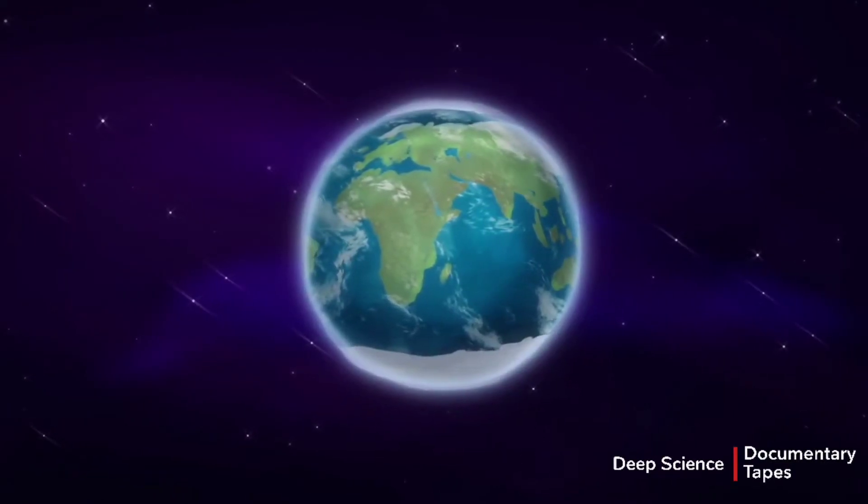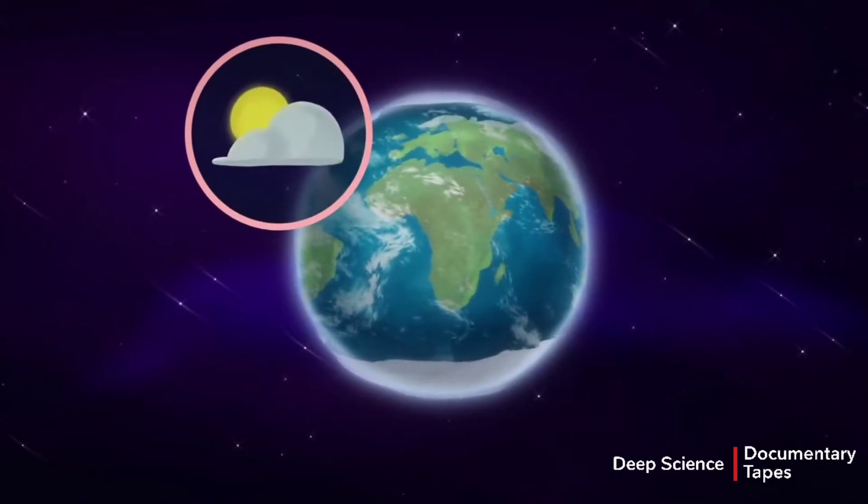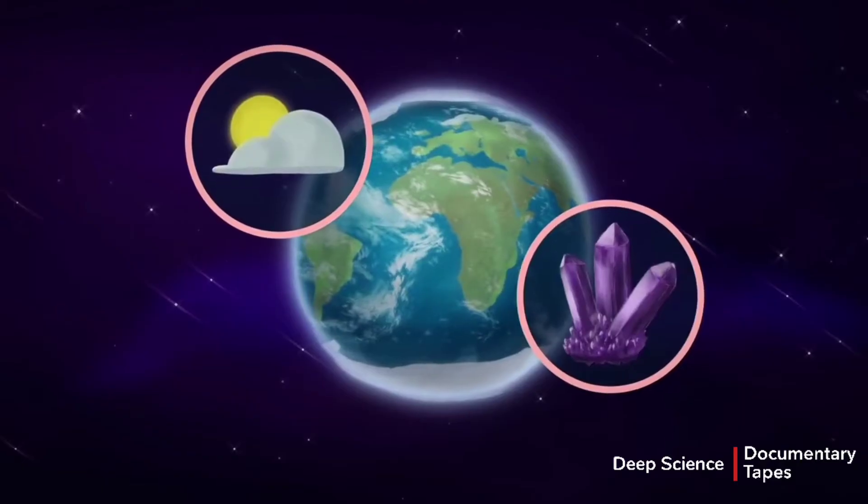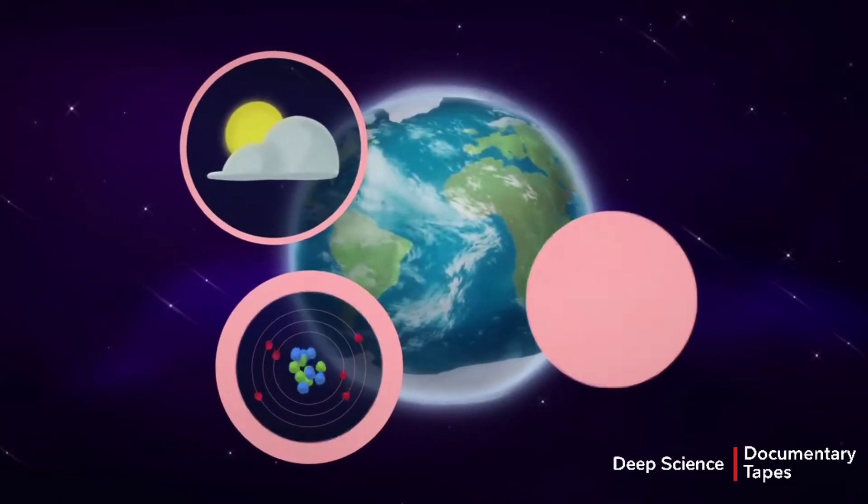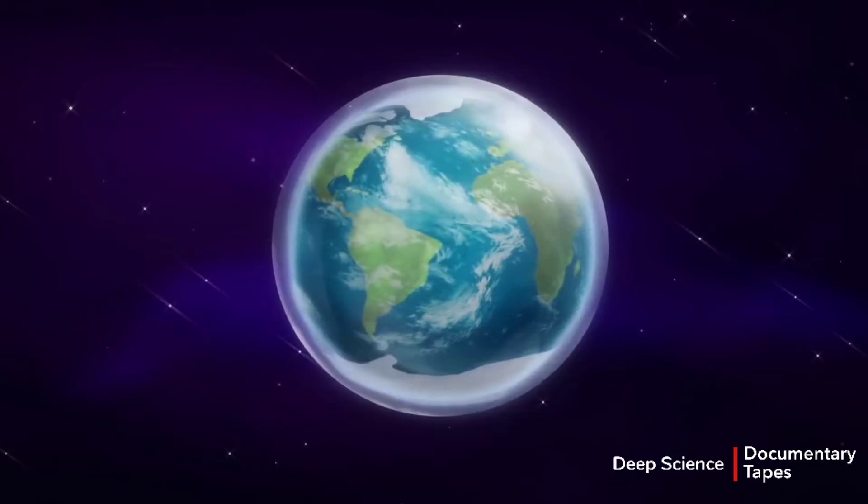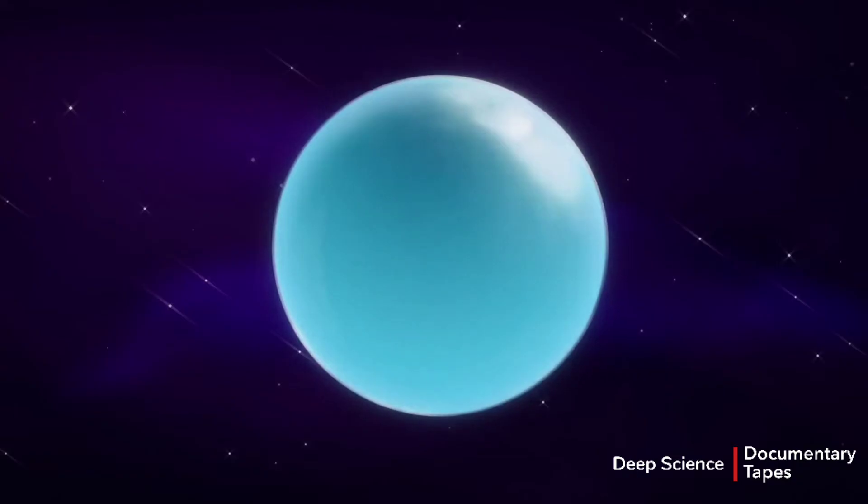We inhabit a little blue planet called Earth. Earth is habitable because it has the right conditions and ingredients to enable life as we know it to evolve and flourish. And one of the most important factors in making our blue planet habitable is the wet stuff itself, water.